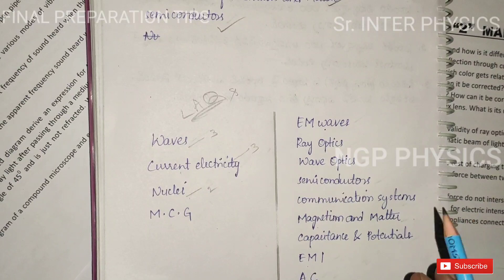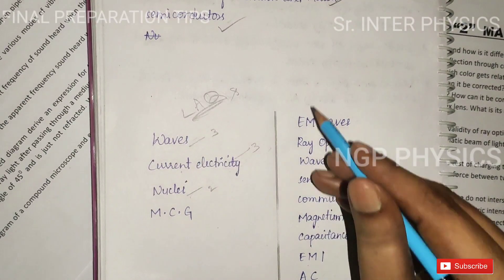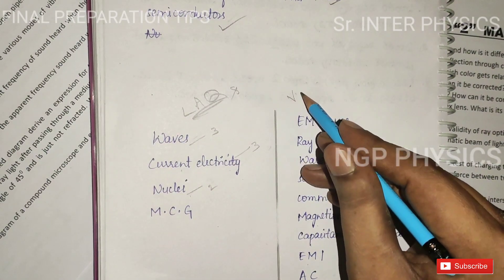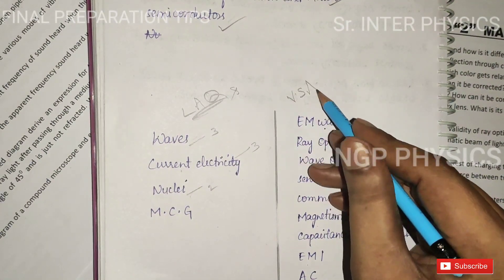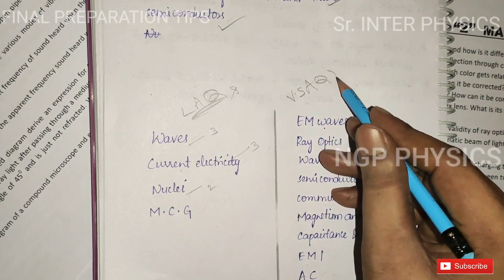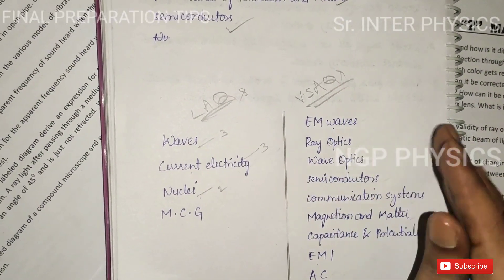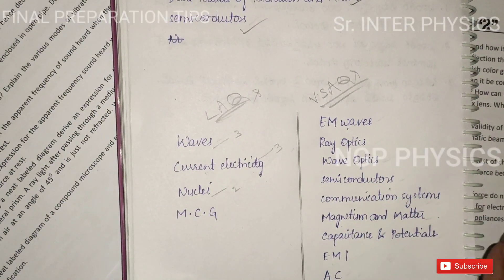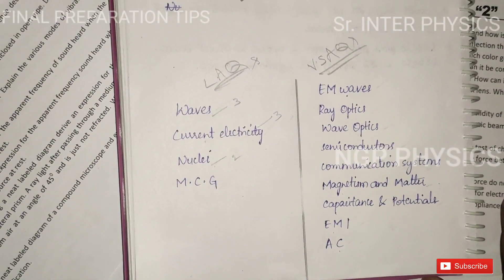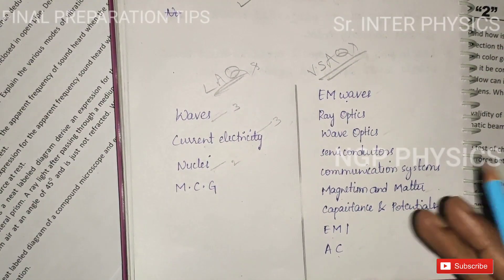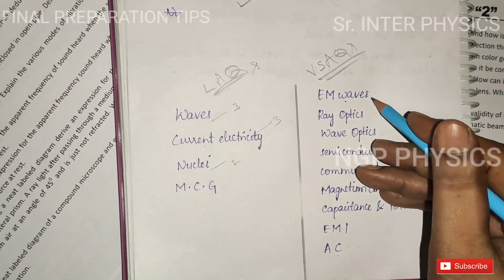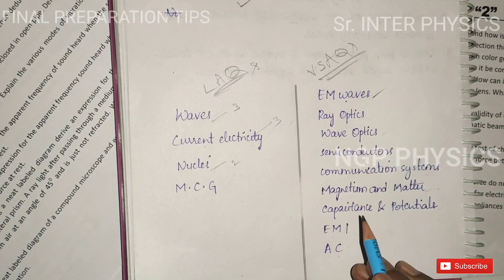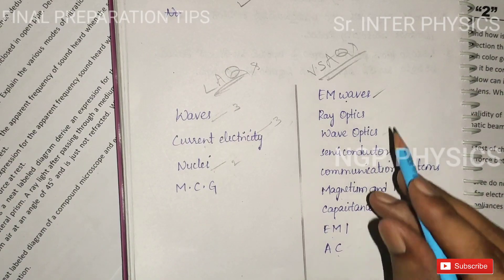Doubt at the end is VSEQs. VSEQs and LAQs — you can easily use these two SAQs. This gives maximum 10, 9, 8 coverage. So here are two questions. EM waves is the first chapter — you can use two marks from it.